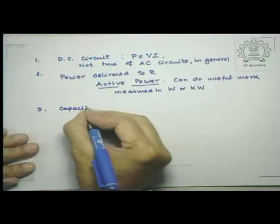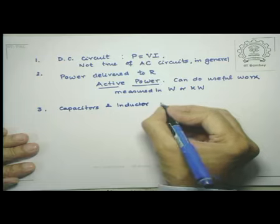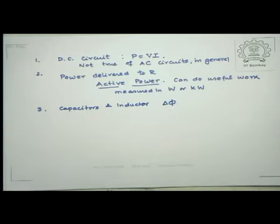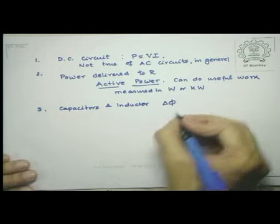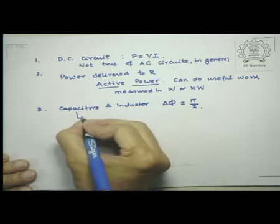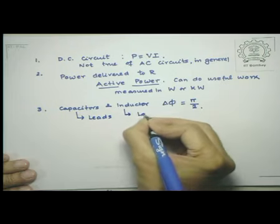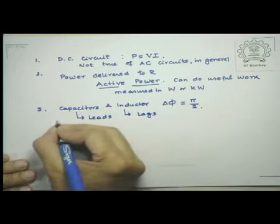For a capacitive or inductive load, the current is out of phase with the voltage by pi by 2. In the case of a capacitor it leads, and in the case of an inductor it lags. So for capacitors and inductors, the phase difference delta phi equals pi by 2 — current leads for a capacitor and lags for an inductor.